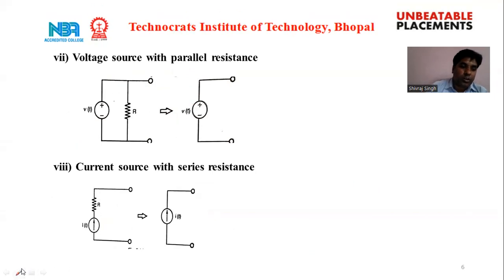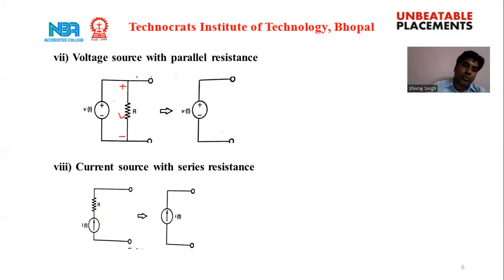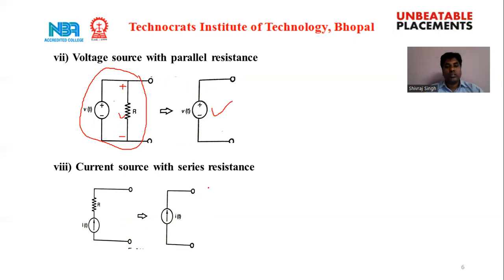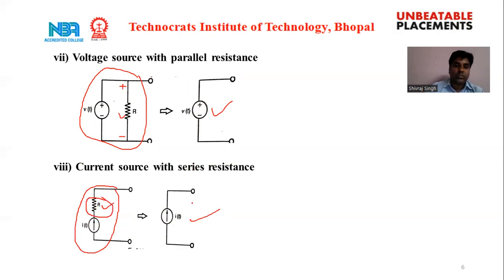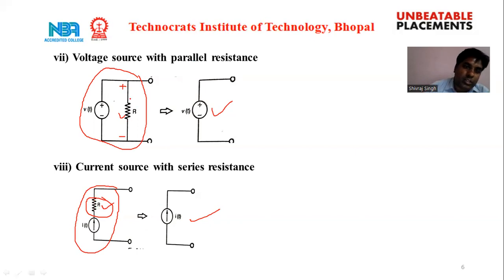The seventh rule: if a voltage source is connected in parallel with a resistance, the same voltage appears across that resistance, so this combination can be replaced by a single voltage source. The eighth rule is a current source with series resistance: if a current source is connected in series with a resistance, the equivalent is a single current source, since the same current flows through the resistor. The series resistance can simply be removed, replaced by a short circuit, while a resistance in parallel with a voltage source is replaced by an open circuit.